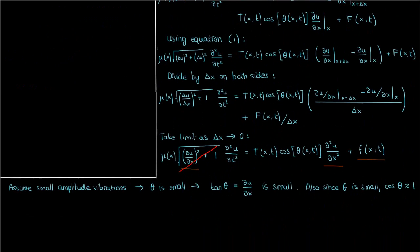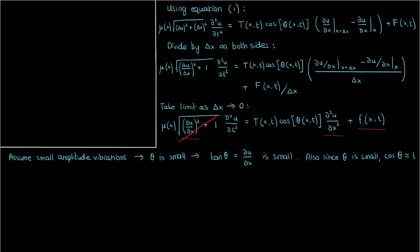Let's go back to the equation for vertical forces. We can get rid of this cosine, because it's just equal to 1, and we can make this tension a constant. In addition, we can assume that the density of the string is also a constant mu. And finally, here is what we end up with.